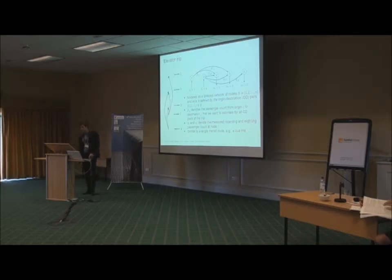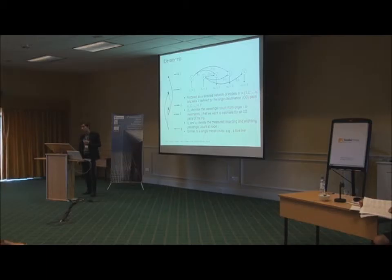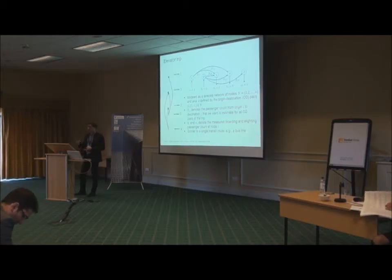This elevator trip is similar to a single transit route, for example, a bus line. There exist several methods, it's a well-studied subject for estimating origin destination matrices for such routes. But we cannot directly use those methods. The main difference is that we have to estimate the origin destination matrix for each elevator trip separately, whereas for a single transit route, such as a bus line, they typically collect observations during one period of time and make the estimation based on that data.